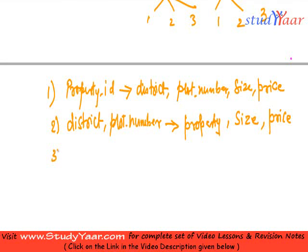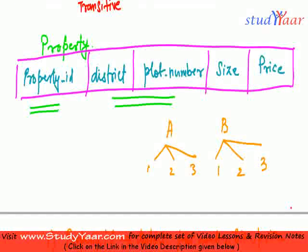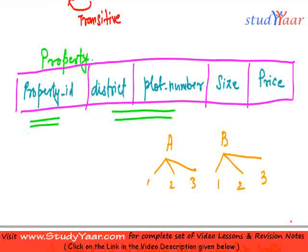And my third FD over here is size determines price. Why is this true? So I assume that property ID is same across the whole country, or whatever this schema is talking about.